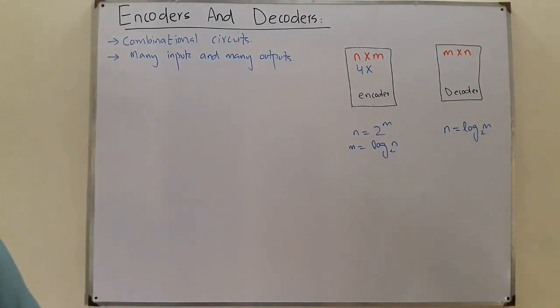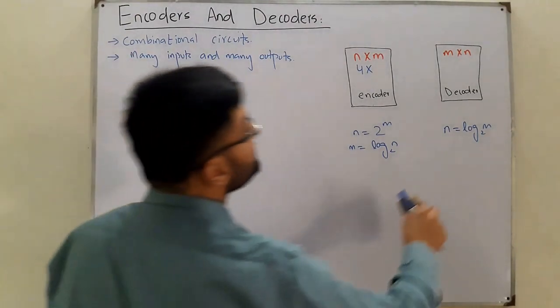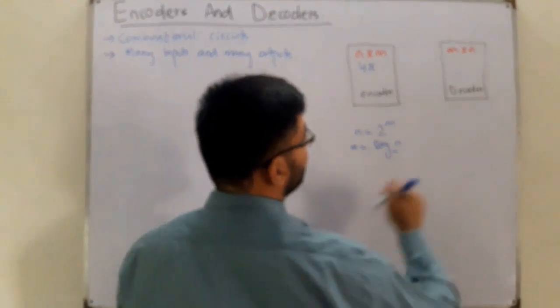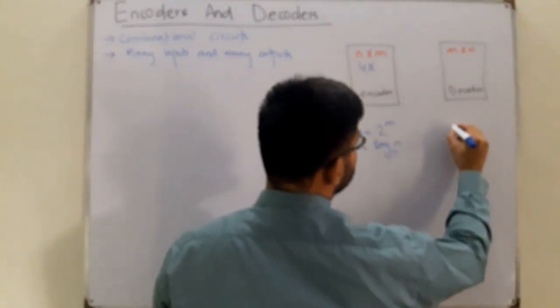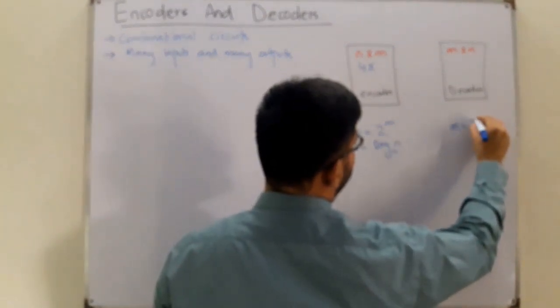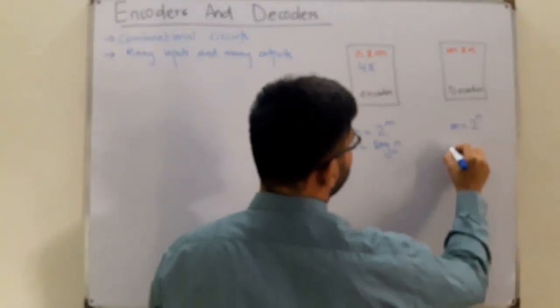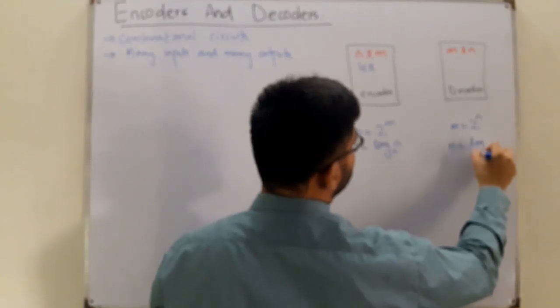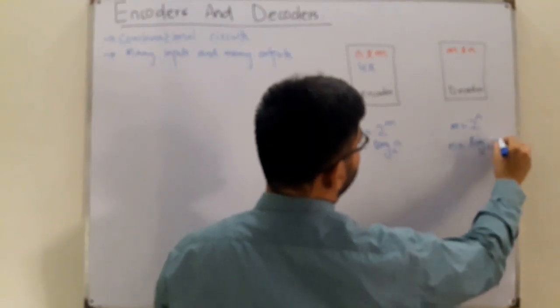For the decoder, the relationship is m = 2^n, or equivalently n = log₂(m). This is the formula that governs the decoder's input-to-output line relationship.